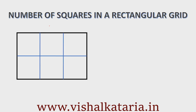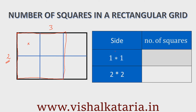Starting with a 3 by 2 rectangle, let's try to understand what are the different kinds of squares in this rectangular grid. The biggest square will be 2 units by 2 units — we cannot have any square bigger than this because the width is 2 units. The smallest square will obviously be 1 unit by 1 unit. Now, how many 1 by 1 squares will there be? There will be 3 along the length and 2 along the width.